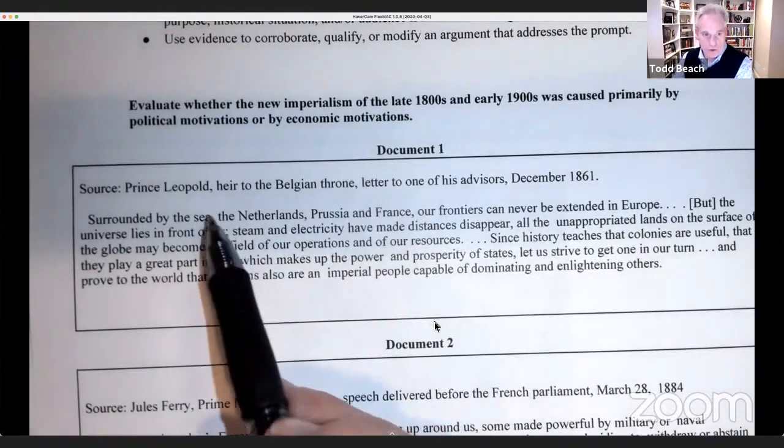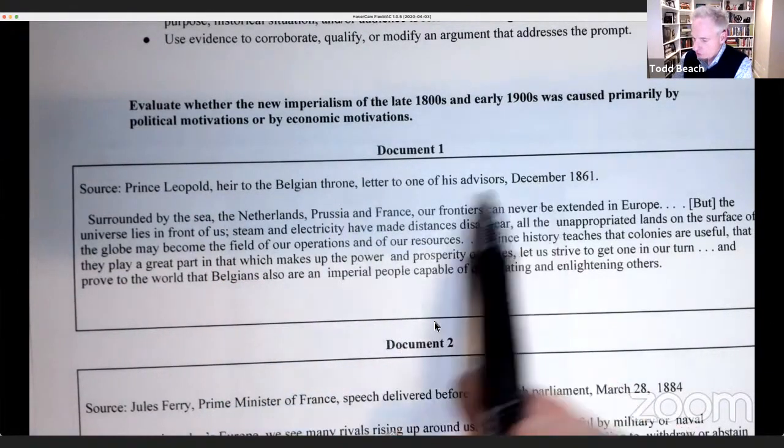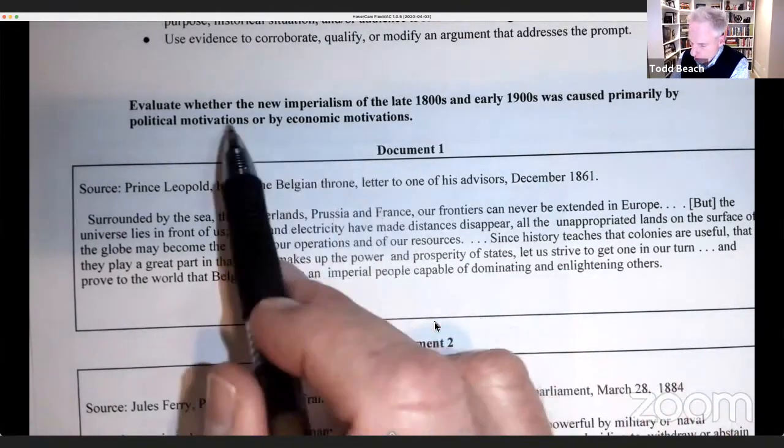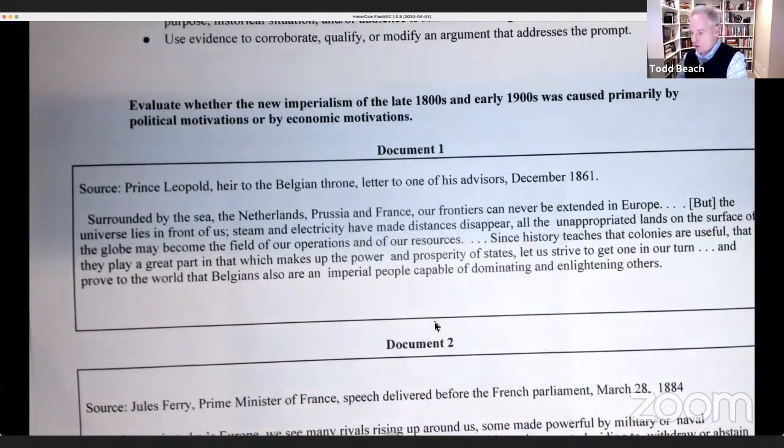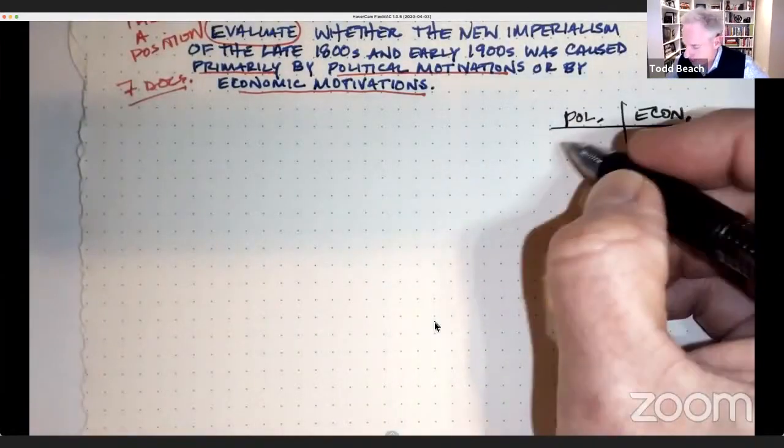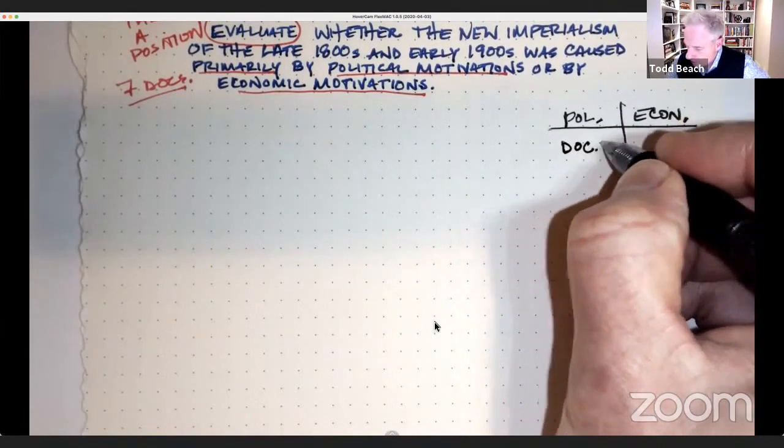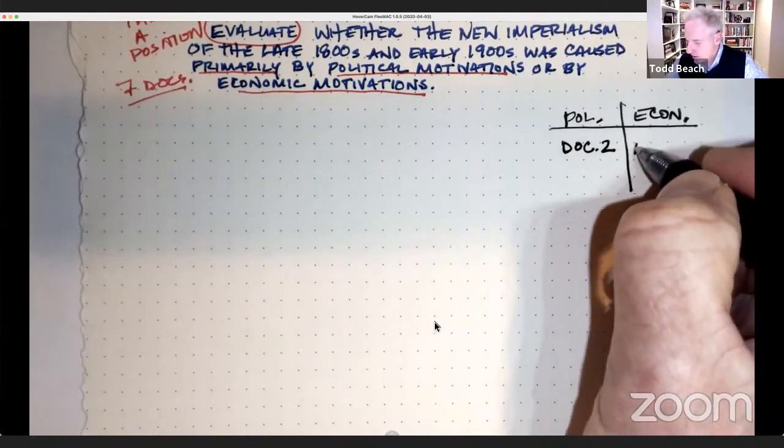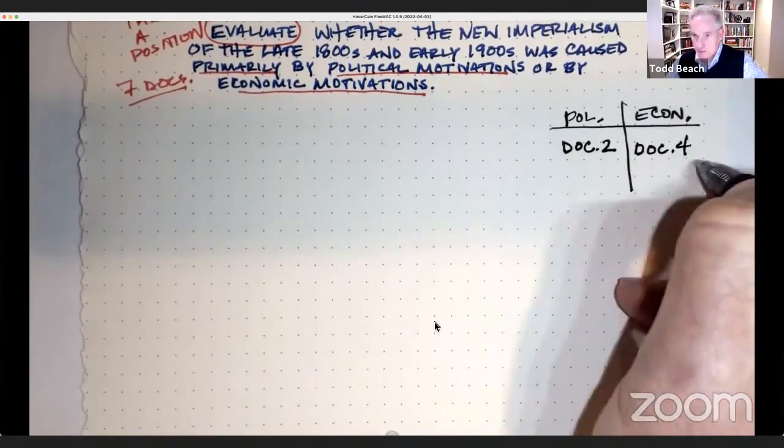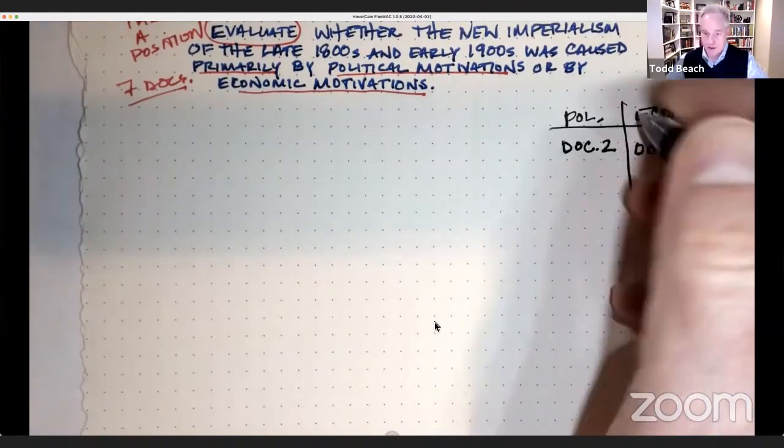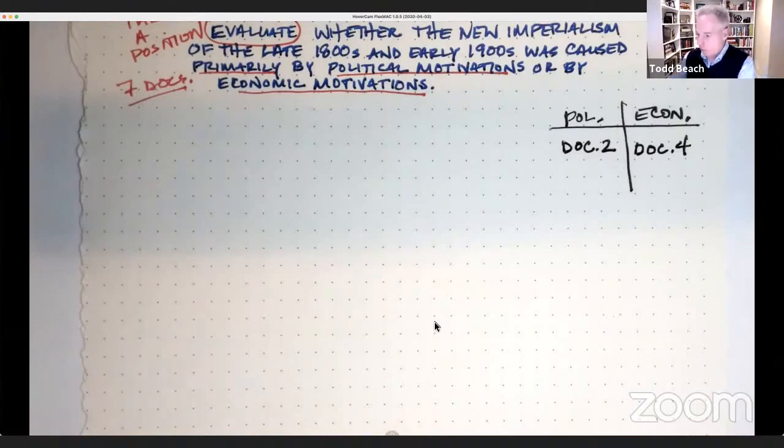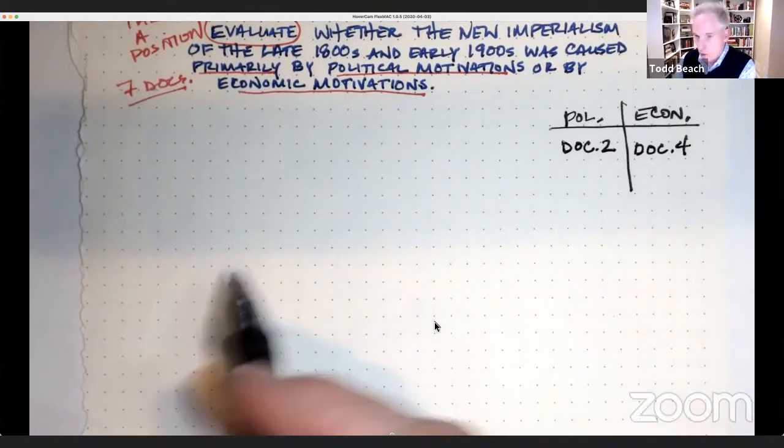Then you are going to read through your documents, and we always read the source line first. As you're reading, you're thinking, is this a political motivation or an economic motivation? You want to do that through each of them. Maybe Doc 2, I think, is a political motivation. I'd put it on that side of the T-chart. Maybe Doc 4 is an economic motivation. You populate your T-chart. It helps you organize and carefully read the documents, and it helps you think which of these arguments am I going to make.